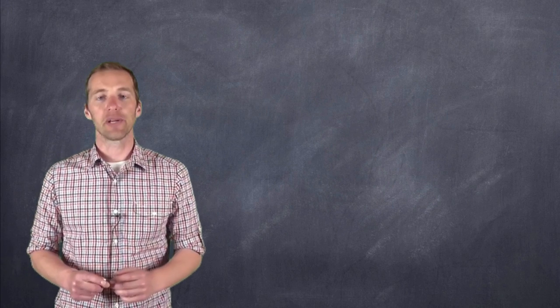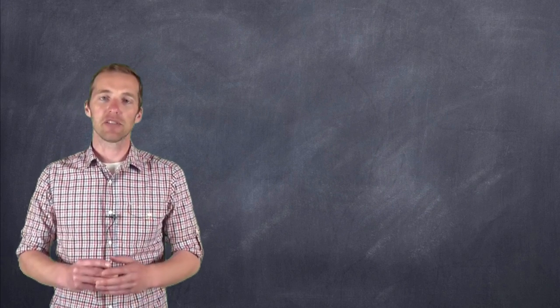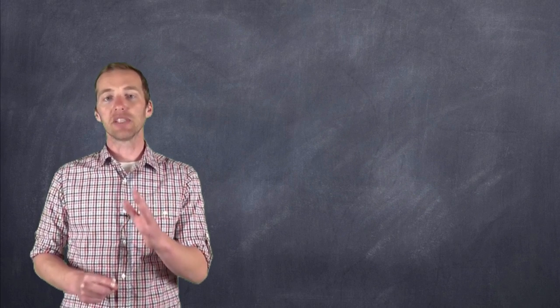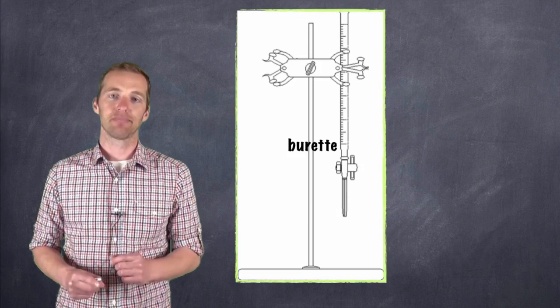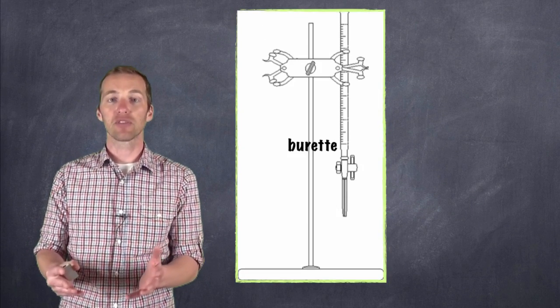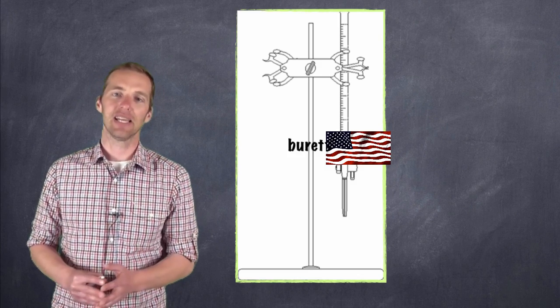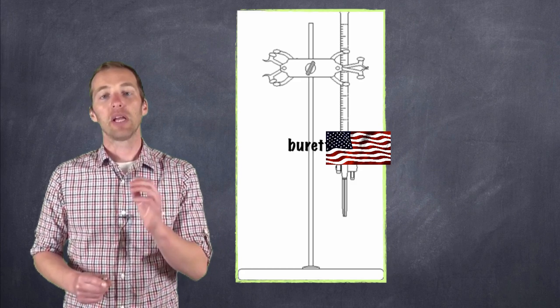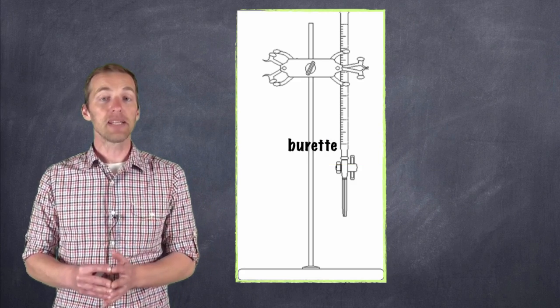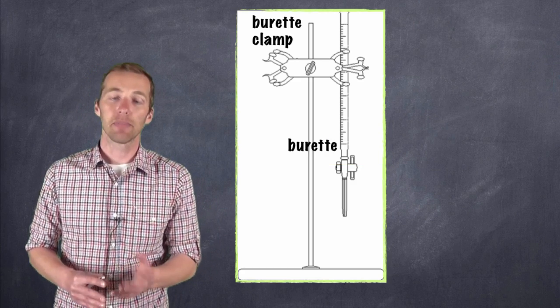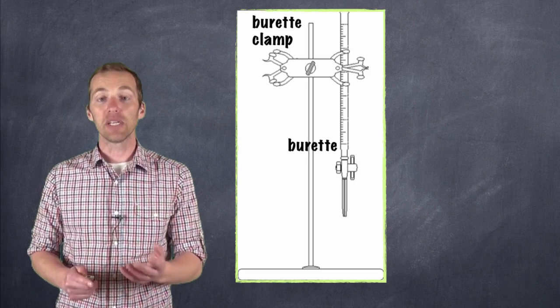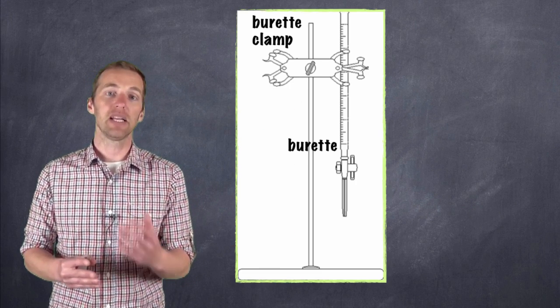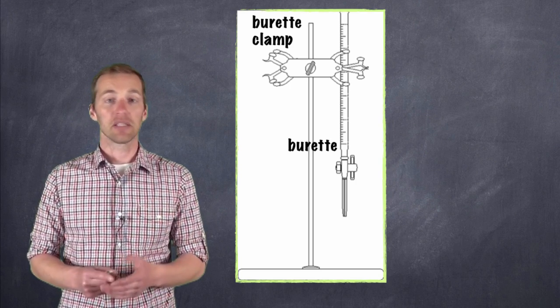So now going back to this titration, we need some specialized pieces of equipment in order to perform a titration. We call this specialized piece of equipment a burette. And if you're one of our American friends watching, you can probably drop the TE at the end. We like the French twist on things up here. And we call the clamp that holds it in place the burette clamp. And typically this is held by a retort stand. You'll notice that a burette clamp can have two burettes simultaneously clamped to it. It's pretty effective.